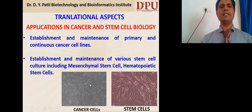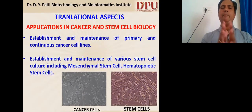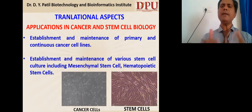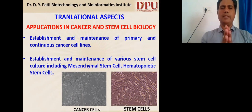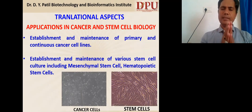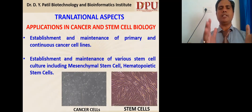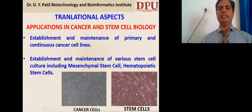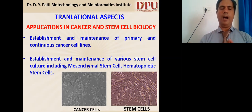Animal tissue culture is also the backbone of cancer and stem cell biology, as well as various other human disease models. Cells grown by animal tissue culture, either primary or continuous cell lines, work as a resource for students, faculty, pharmaceutical industry, and various biotechnology industries. The cancer cells and stem cells shown here are grown under the laboratory of our institute.